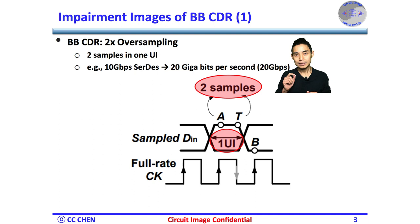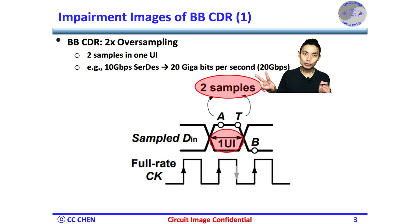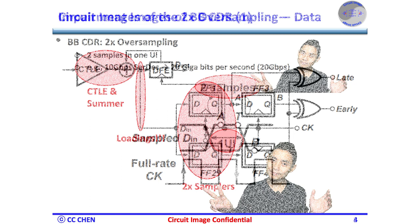For example, for 10 Gbps data transmission, your Bang-Bang CDR sampler runs at 20 Gbps. Therefore, the Bang-Bang CDR is also called a 2x oversampling CDR. The obvious impairment is the added power due to the 2x oversampling, which may show at least two times the power at the CDR.